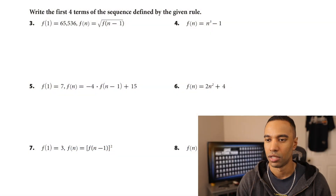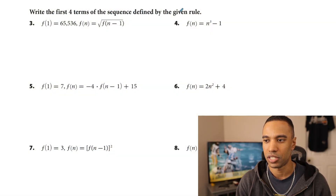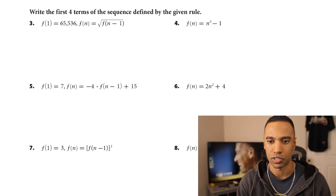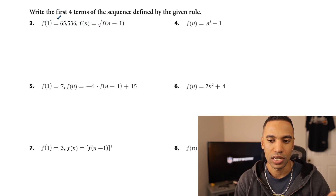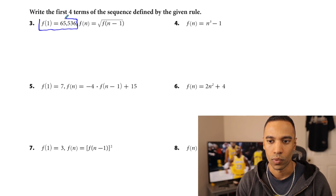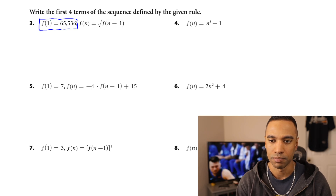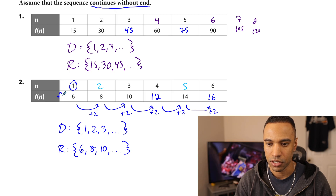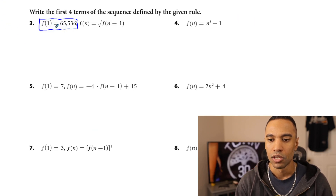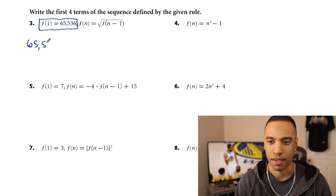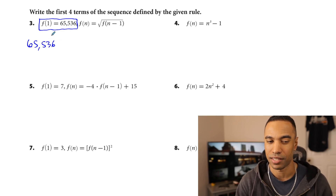The list will not generally be written as tables. Now we're going to use an equation to build ourselves a sequence — at least the first few terms. Write the first four terms of the sequence defined by the given rule. Number three: this is the sequence, this is the first term. When they say f of 1 equals — going back, if n was 1, here f of 1 equals 65,536. That's the first term in the sequence.